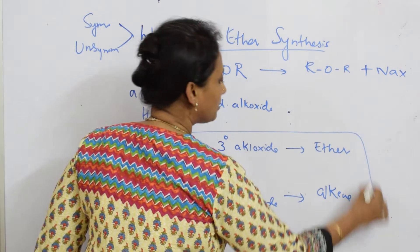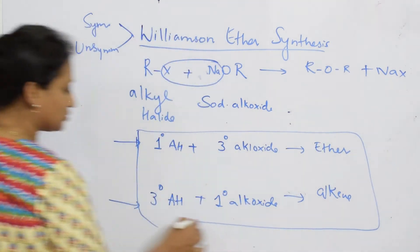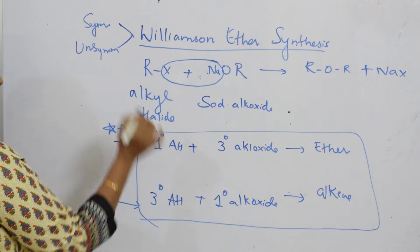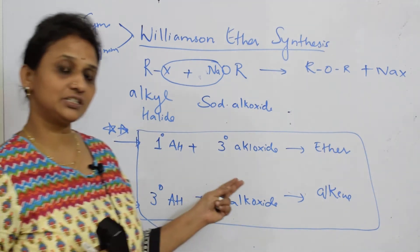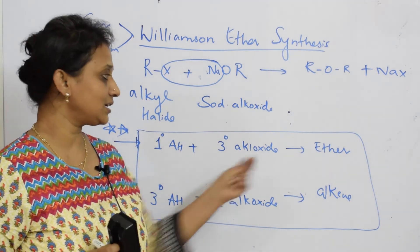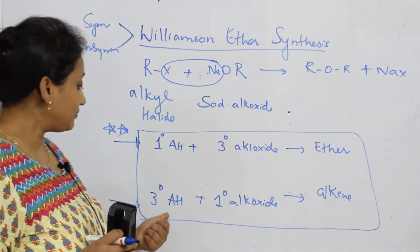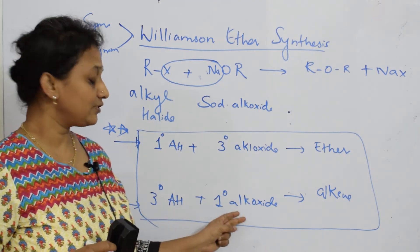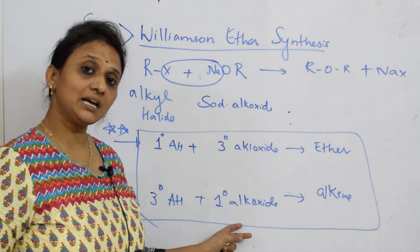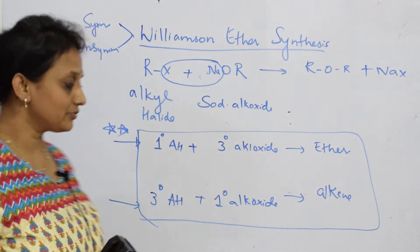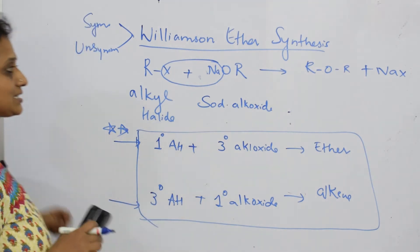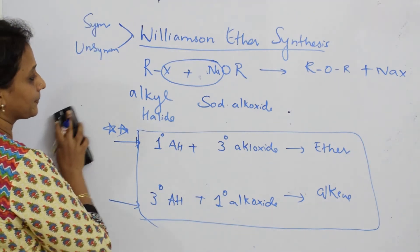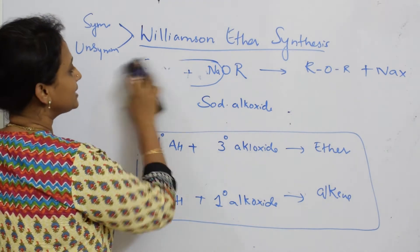This is very important — please note it carefully. If the alkyl halide is primary and the tertiary alkoxide is present, you get an ether. If you pick up a tertiary alkyl halide and a primary alkoxide, you get alkenes. So with this understanding, let me start with the reaction.